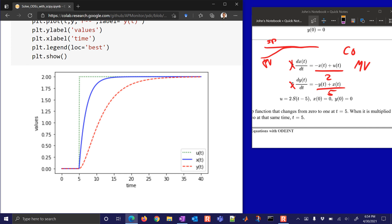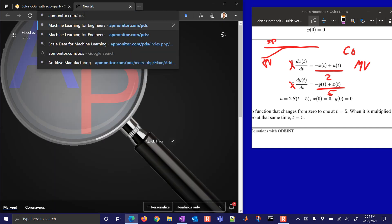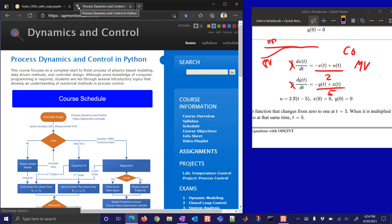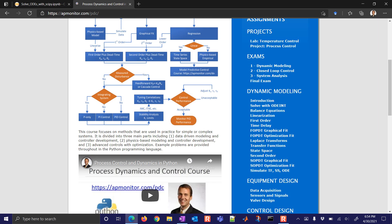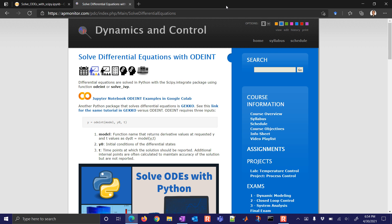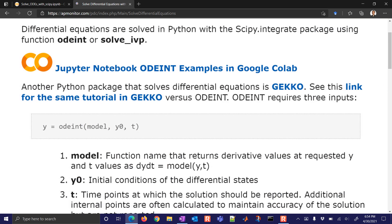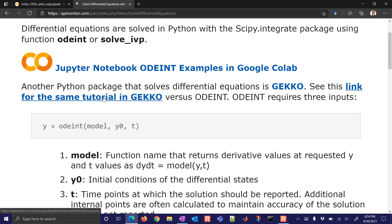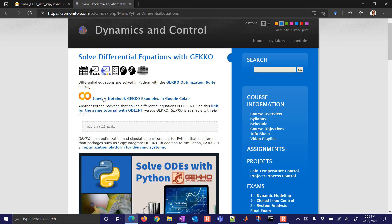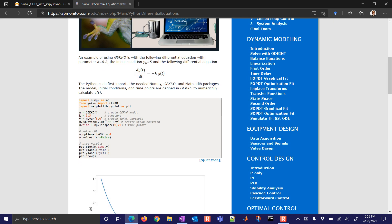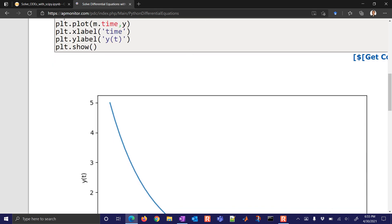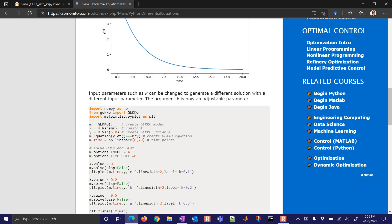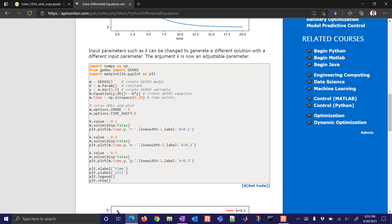So that concludes this tutorial. Again, if you'd like to get more information, just come to the PDC website, the Process Dynamics and Control website, and you'll be able to see more of this content with like solve odeint. And you can also check out this other Python package for solving differential equations. And here's a link to solve all these same examples, but with Gecko, the Gecko package. So just some examples of how to solve that first one. And then we'll go through a tutorial video here as well on how to do the same exercises as we just covered, but using Gecko. Thank you.